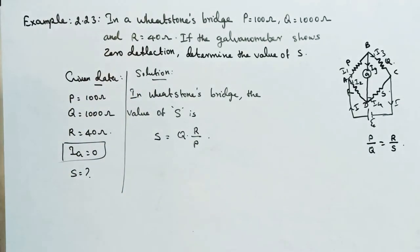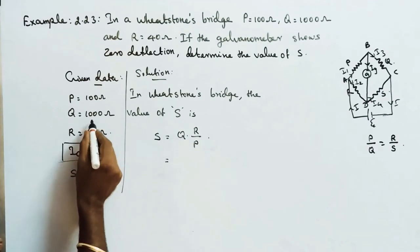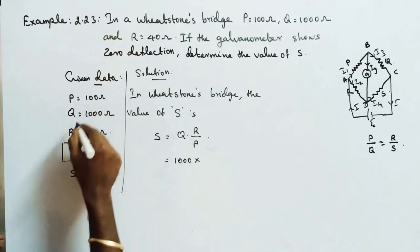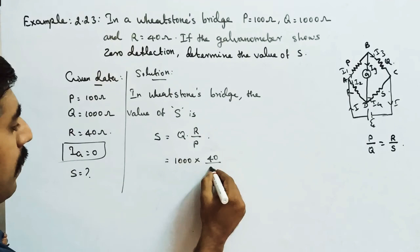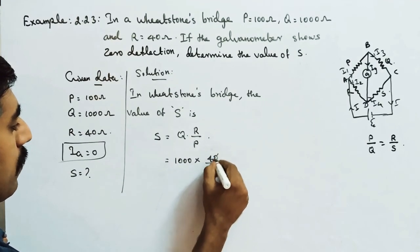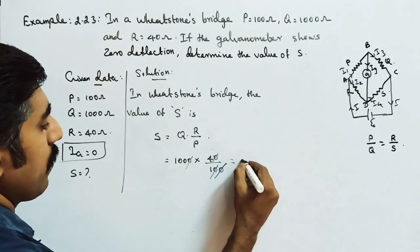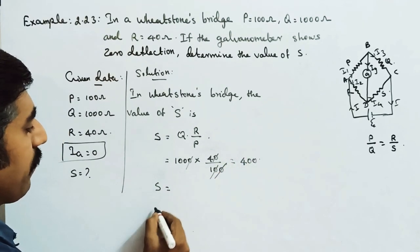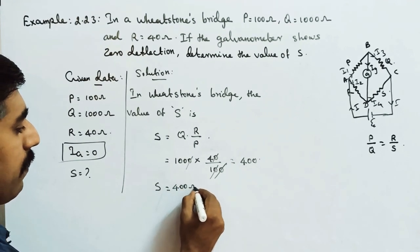So S equals Q value 1000 into R value 40 by P value 100. The zeros cancel, so 100 into 4 equals 400. Therefore, the value of resistance S is equal to 400 ohm. That's all.